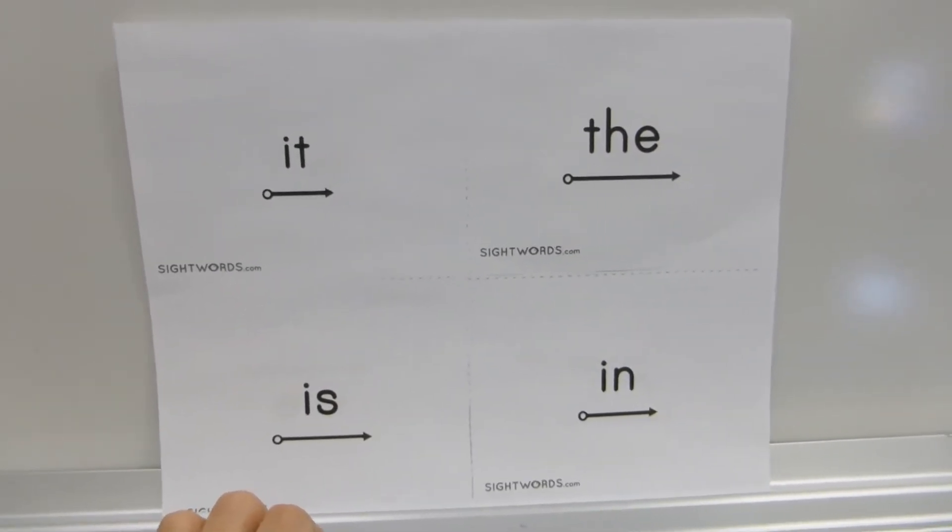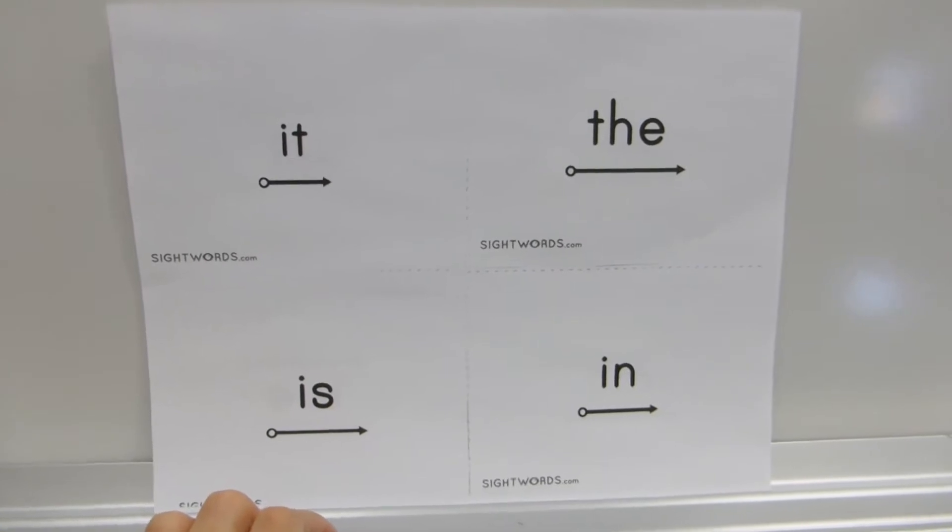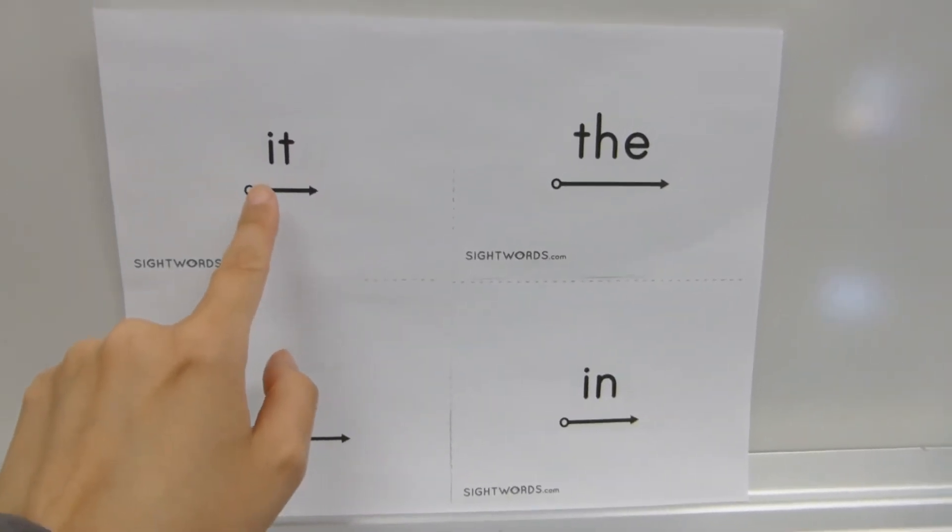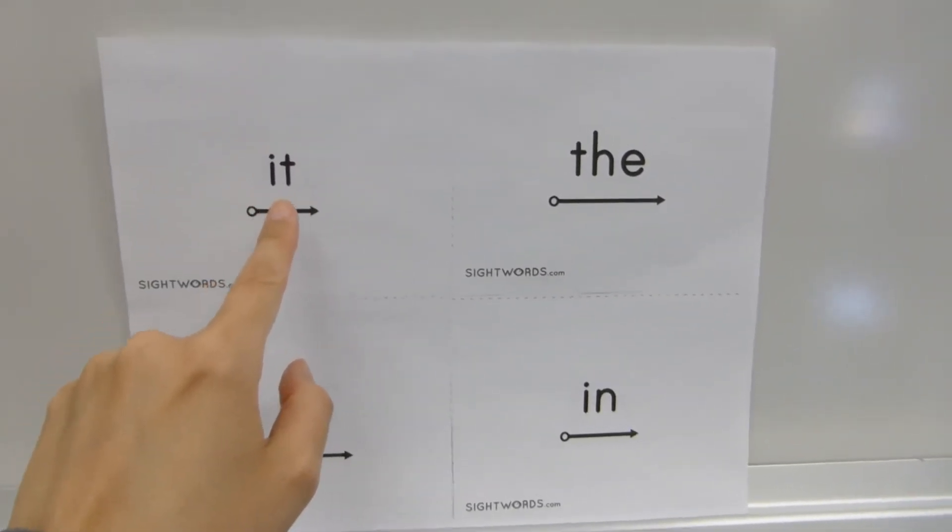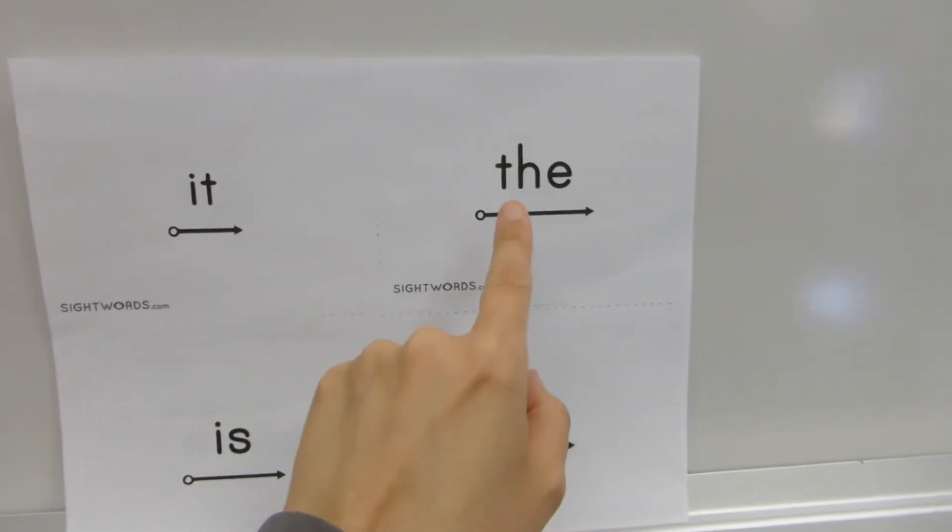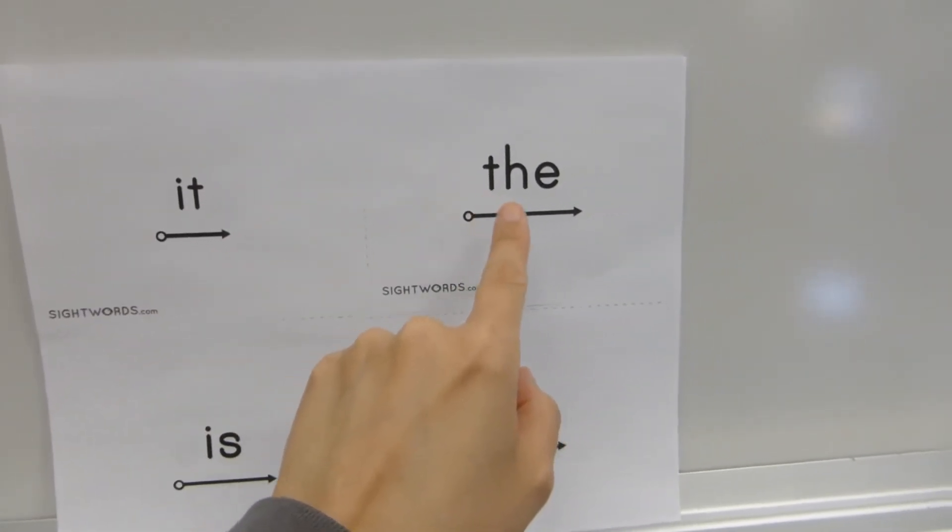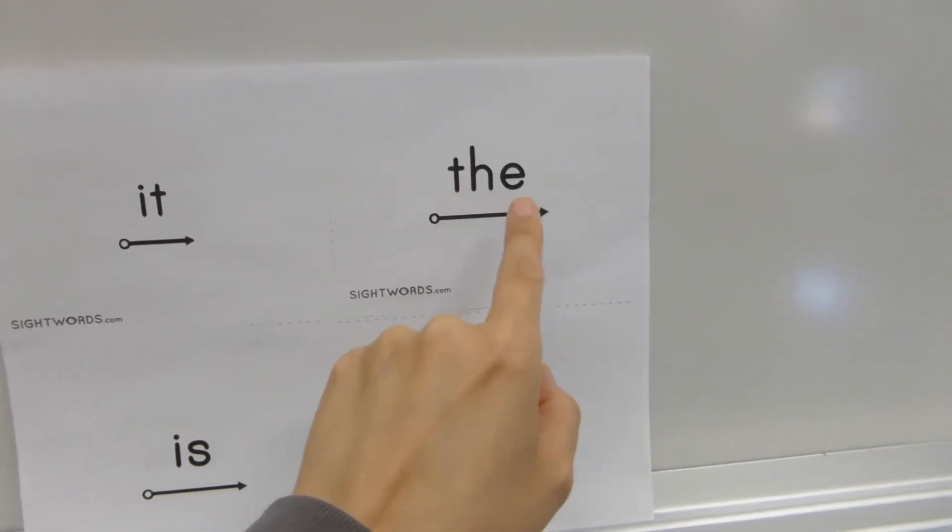Sight words are words that sometimes you can't sound out. This word is one that you can sound out, it, it. This word is one that you can't sound out, th, the, the.